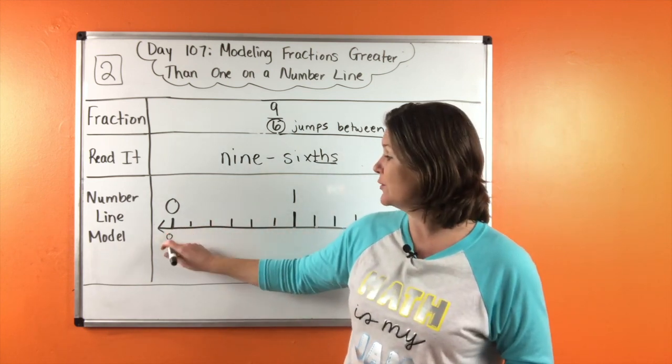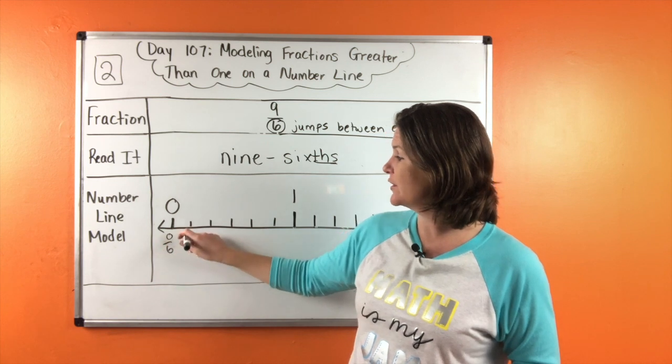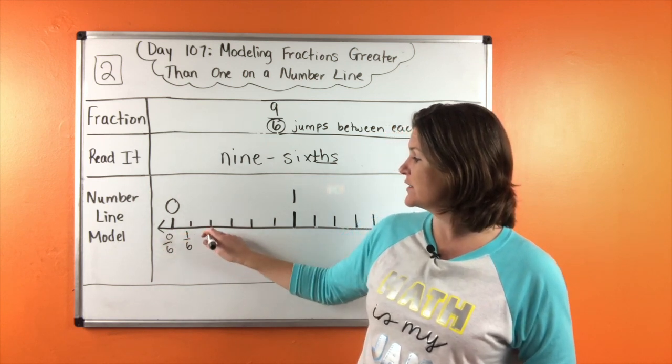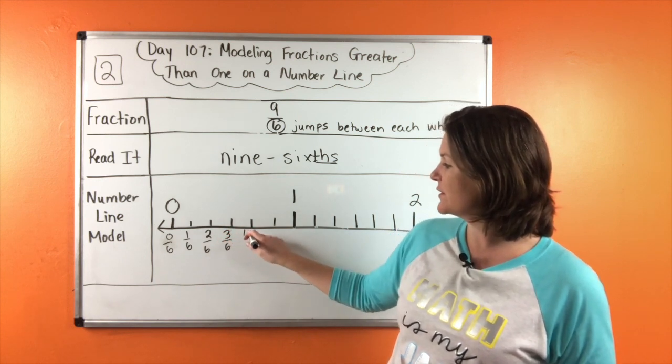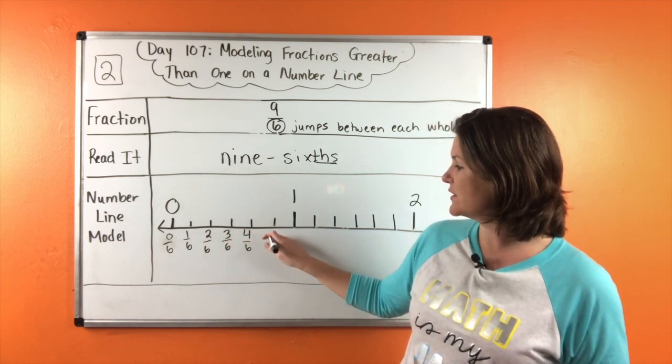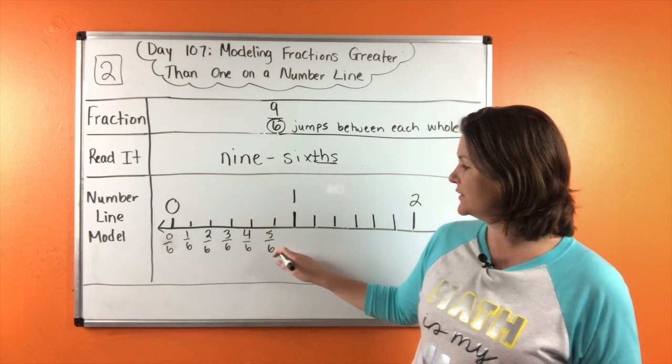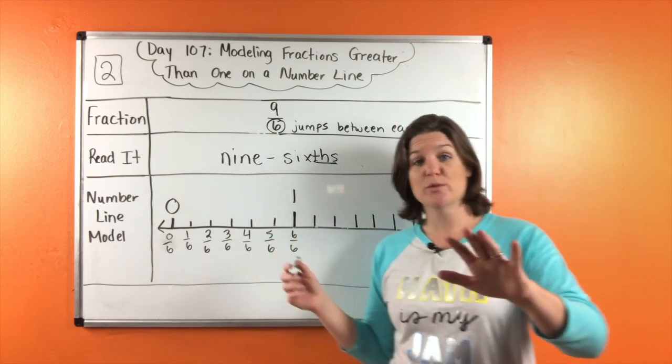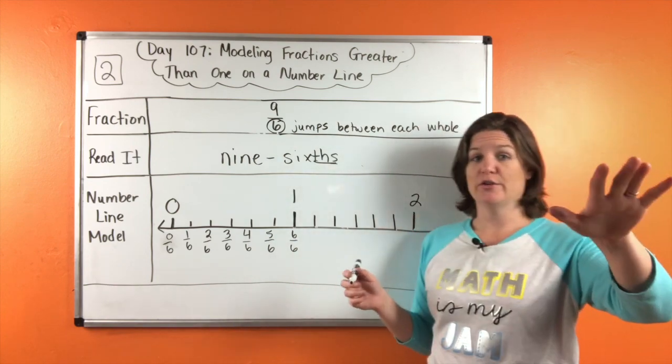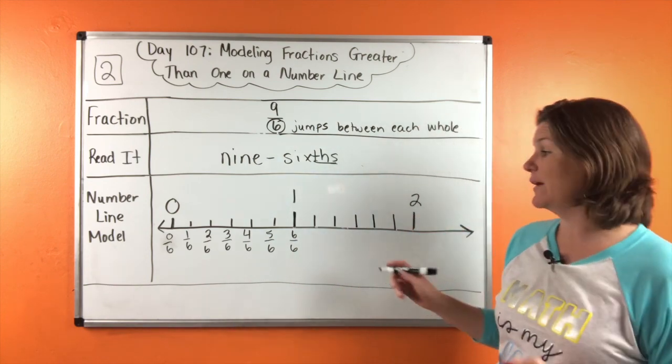So we have to kind of go back and just start counting. So this would be zero sixths, one sixth, two sixths, three sixths, four sixths, five sixths, and six sixths. Now you might want to watch what I'm doing before you draw this. Okay, you'll get a minute to pause the video and draw that. Just watch for right now.